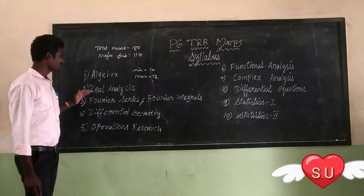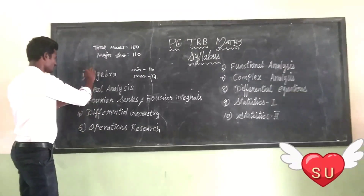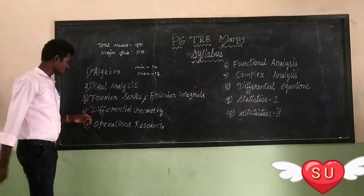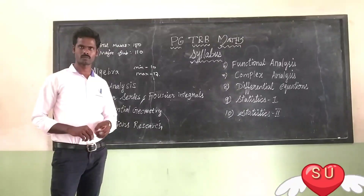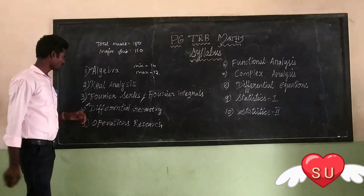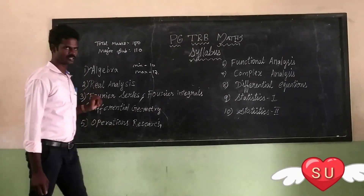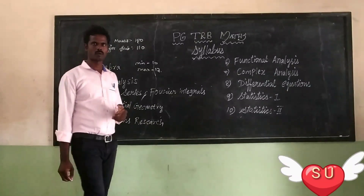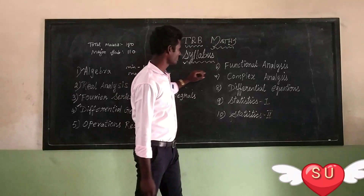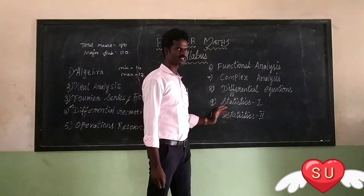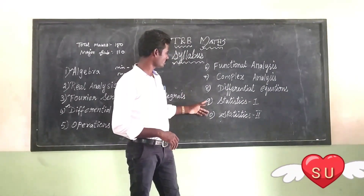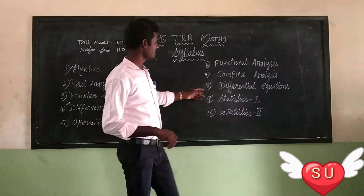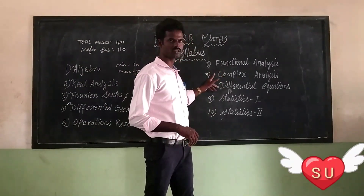So, now we have algebra again as a model. We can change the level slightly — this is something easier to prepare but you can have a choice. Next up, we have Fourier series and Fourier integral — sequences and series to prepare, so this is easier. Next one is differential equations. This is complex analysis; we have already completed complex analysis.